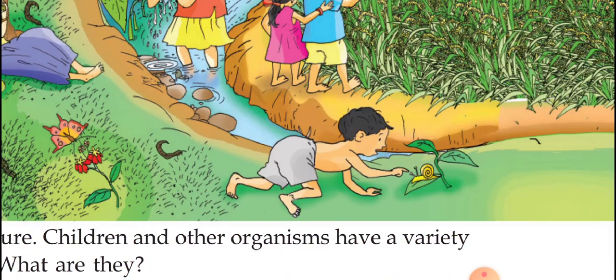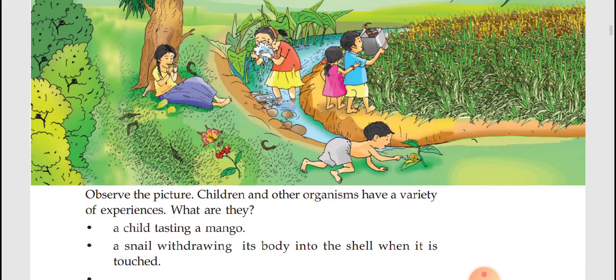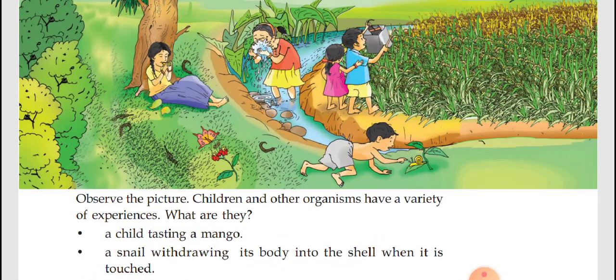One more small boy is trying to touch a snail. What is the snail trying to do? It is withdrawing its body into its shell. The snail has a shell which is a protection area. Whenever the snail feels a dangerous situation, the body will be withdrawn inside the shell. So there are so many actions and reactions going on in this particular picture.